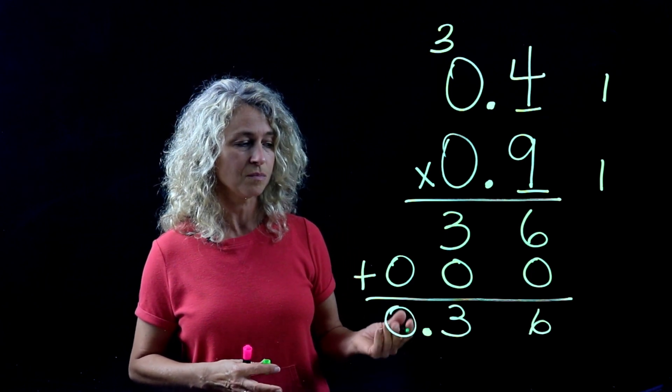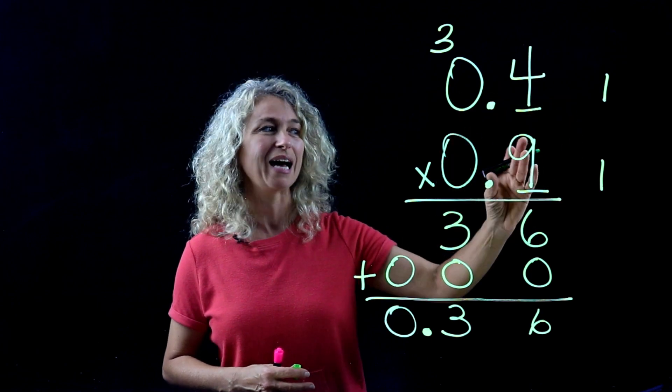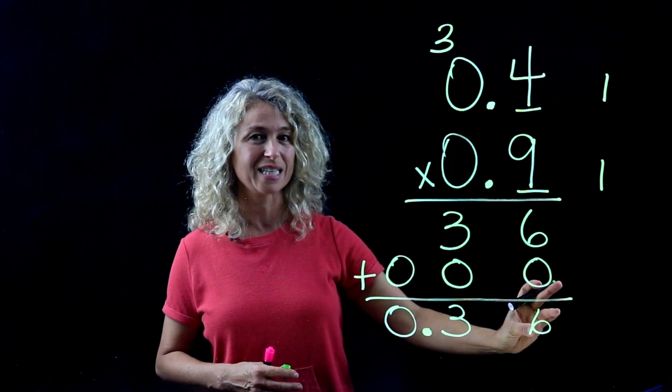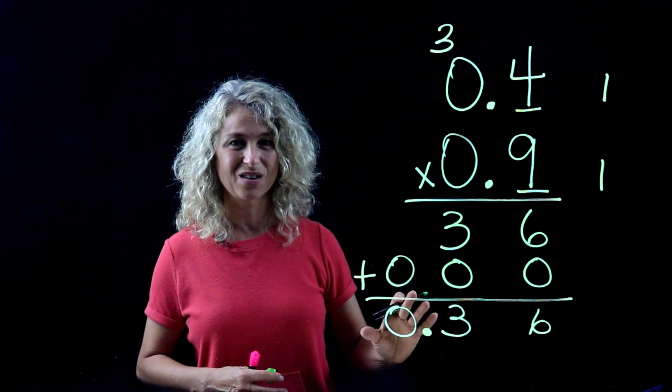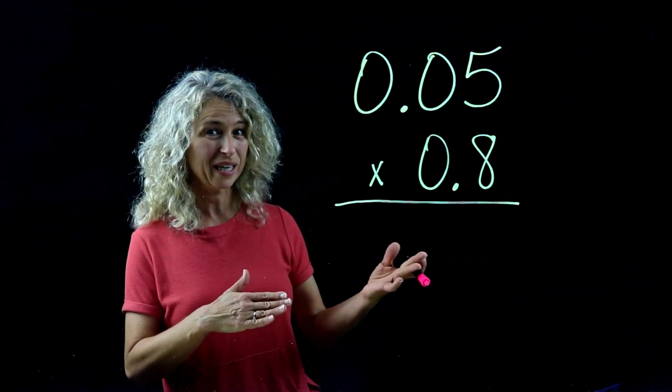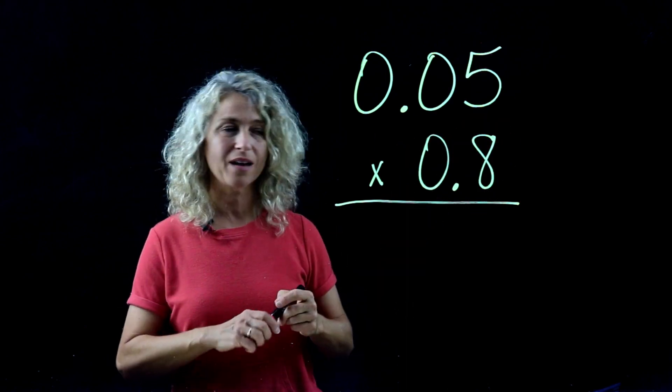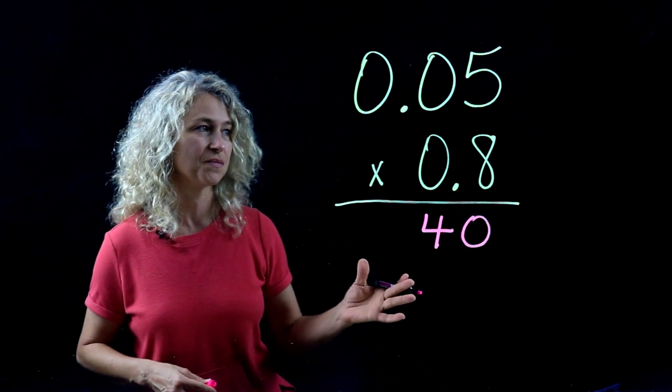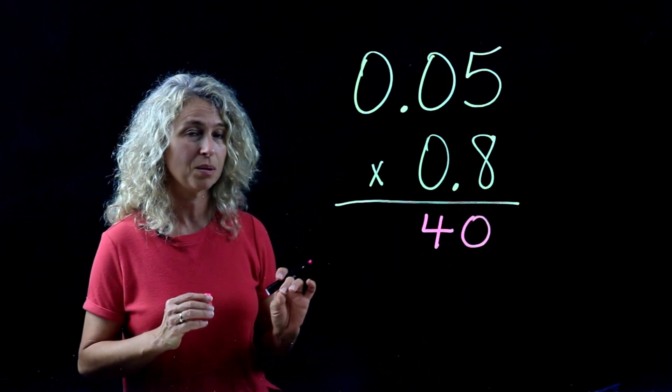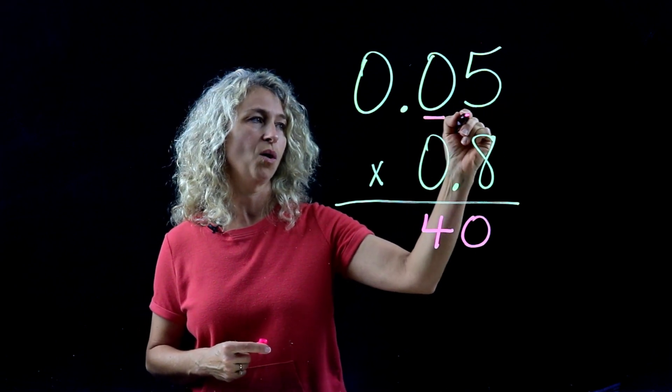All right, so next time just multiply 9 times 4 is 36 and pull your decimals over without having to multiply all the zeros out. So a quick example, let's just multiply 8 times 5. 8 times 5 is 40. Let's count the decimal places behind the decimal, or to the right of the decimal: 1, 2.